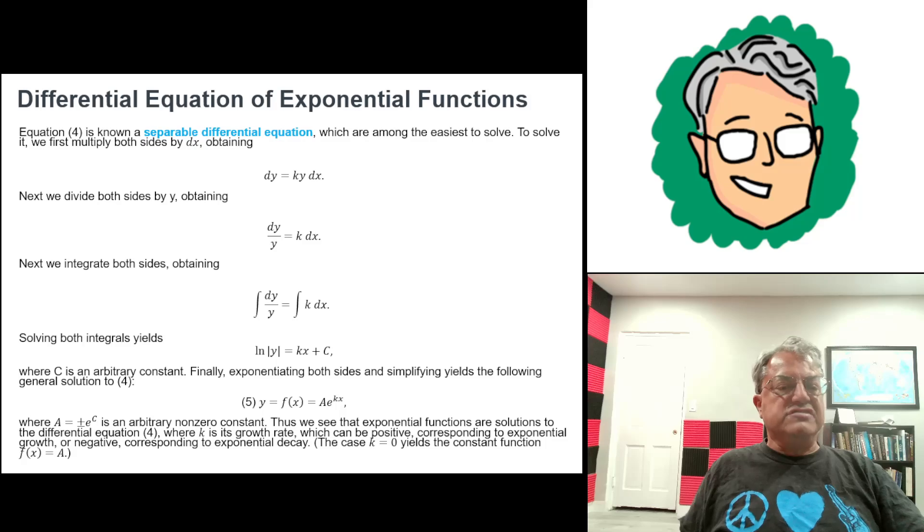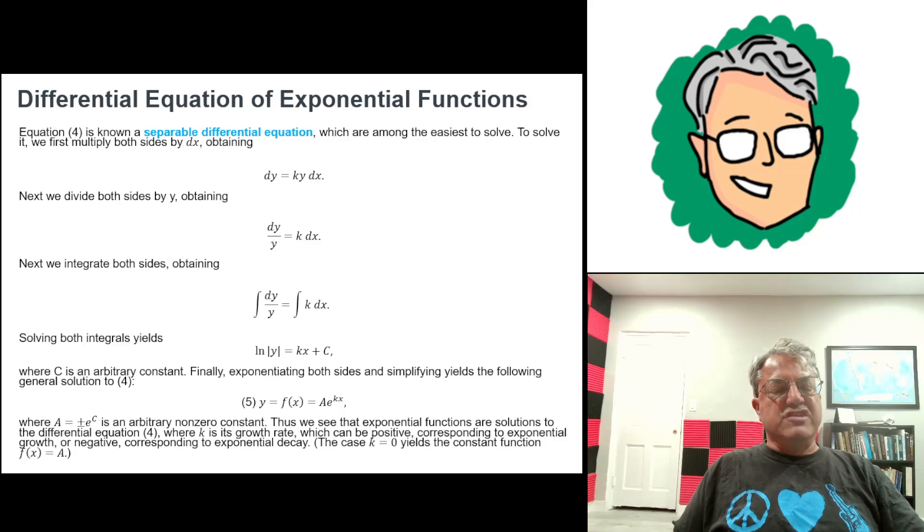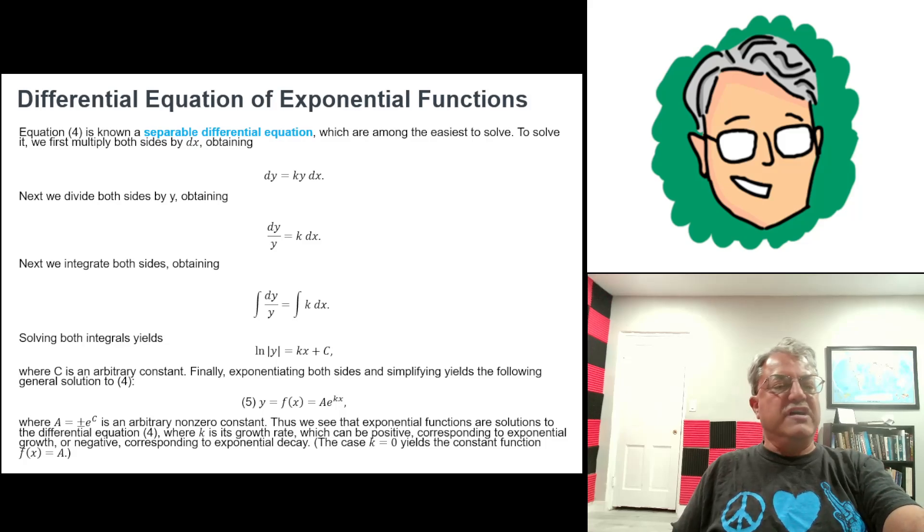And k is another constant. Or no, k doesn't have to be positive. But that is the general solution to the differential equation we started with. So that's how you solve this differential equation. You see that it leads to the solution always being an exponential function, where these a and k are arbitrary constants. So that's how they arise.